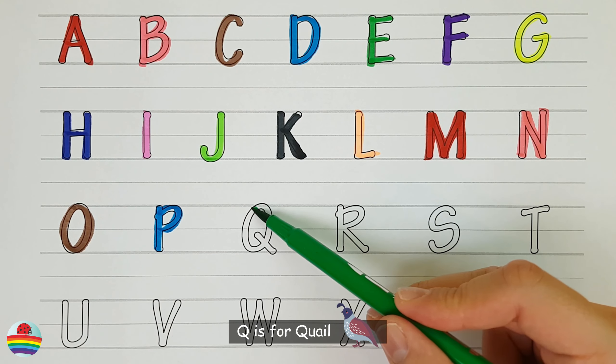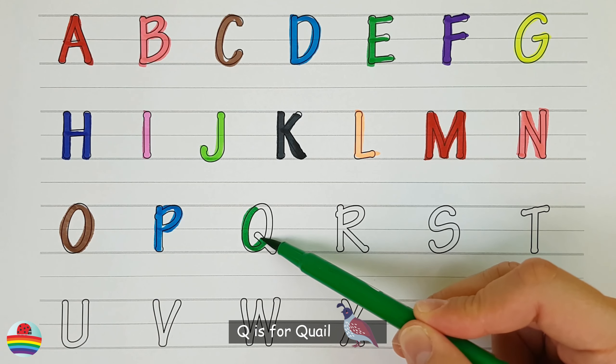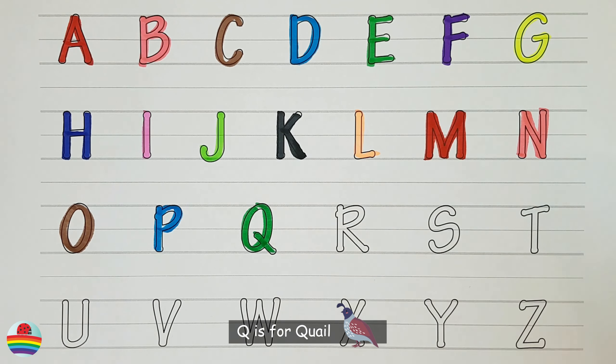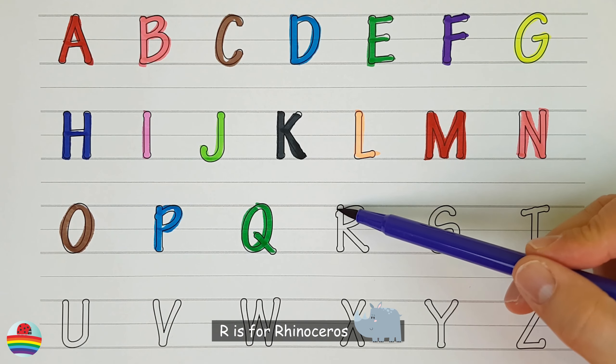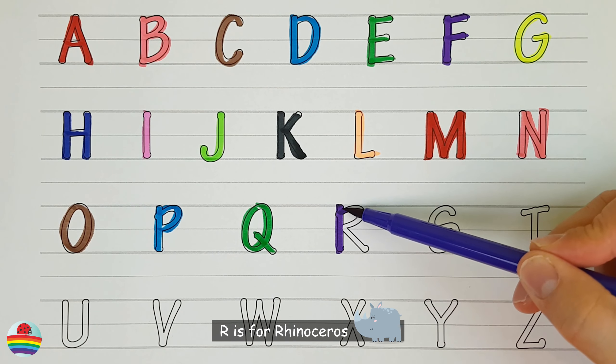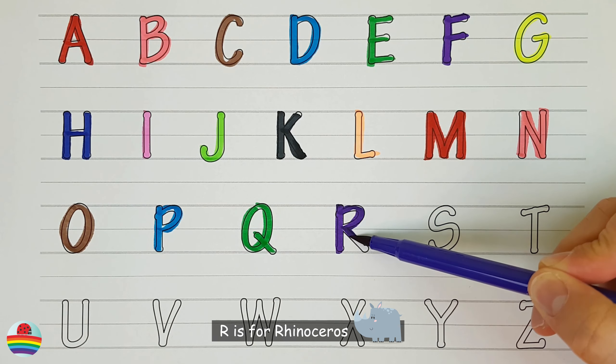Q. Q is for quail. R. R is for rhinoceros.